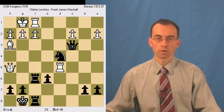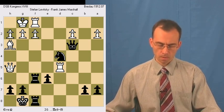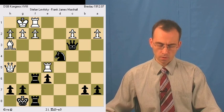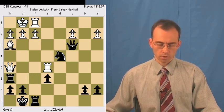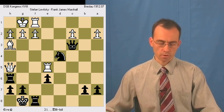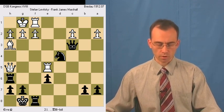Black doubles rooks. And rook e5. And here black plays excellent move, rook h6 attacking queen.